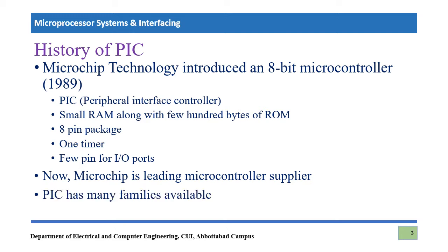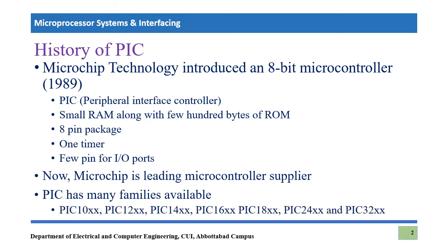PIC has many families — a family stands for a certain series of microcontrollers that are similar in certain functionality, for example the number of bits processed at a time. Out of the famous families, PIC10, PIC12, PIC14, and PIC16 are considered traditional families, PIC18 stands in the middle, and PIC24 and PIC32 are recent upgrades.